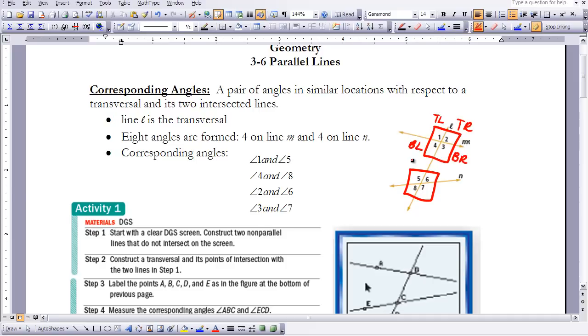And then I can do the same thing over here: top left, top right, bottom left, and bottom right. So if I want to talk about corresponding angles, they would be angles that would be in the same quadrant. So here I've got top left and top left, so 1 and 5 would be corresponding angles. If I look at the top right, 2 and 6 would be corresponding angles. 4 and 8 would be corresponding, and 3 and 7 would be corresponding.